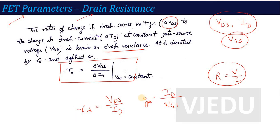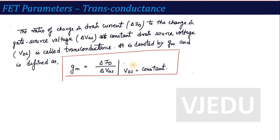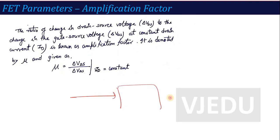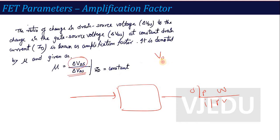The third factor is the amplification factor. Like in BJT where we looked at output current with respect to input current, FET is a voltage amplifier. A voltage amplifier is a device where input voltage is converted to increased output voltage. So the amplification factor of FET is output voltage divided by input voltage. The output voltage of FET is VDS and the input voltage is VGS. So VDS divided by VGS at constant ID is called the amplification factor, denoted by mu.